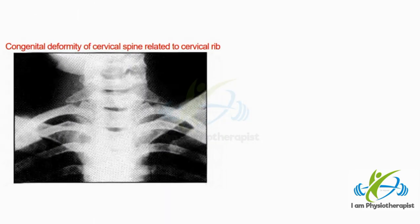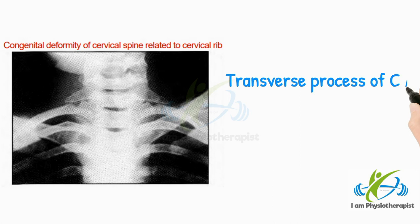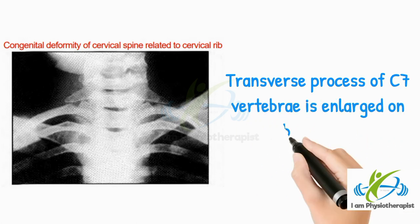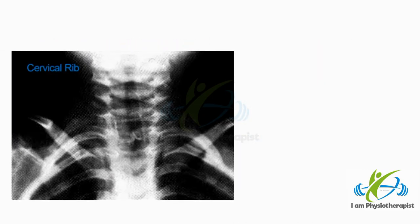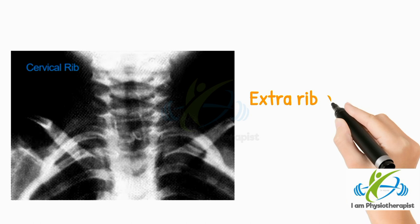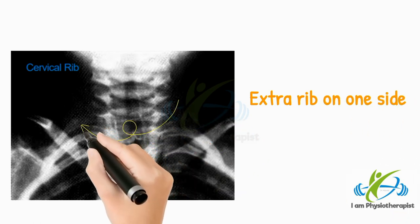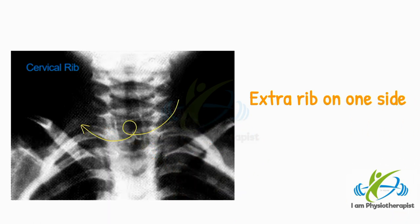This radiograph shows that the transverse process of C7 vertebra is enlarged on both sides. Diagnosis is congenital deformity of the cervical spine. This radiograph shows an extra rib on one side. Diagnosis is cervical rib.